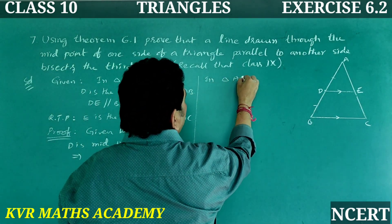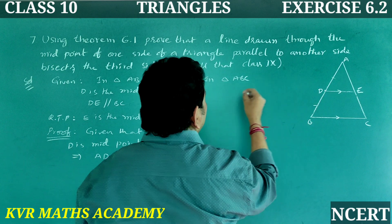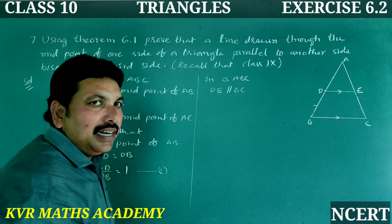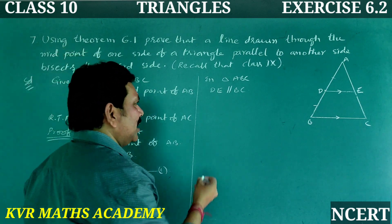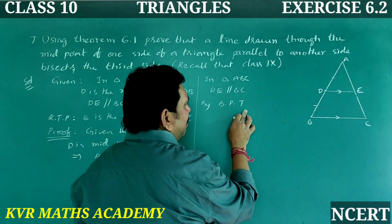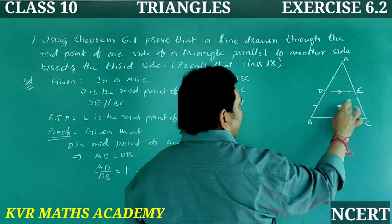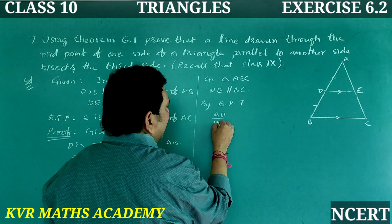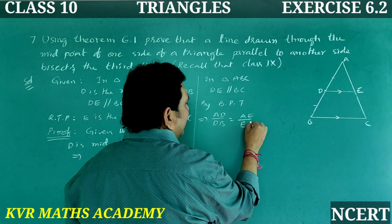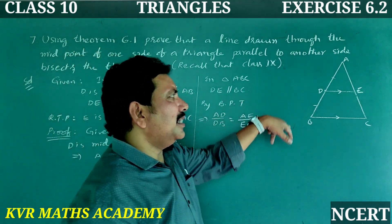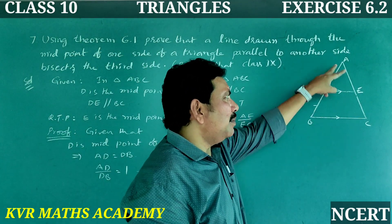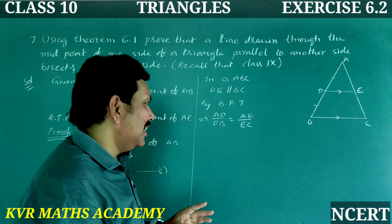In triangle ABC, DE is parallel to BC. So by the Basic Proportionality Theorem, AD divided by DB is equal to AE divided by EC.